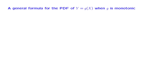We have already worked through some examples in which x was a random variable with a given PDF, and we considered the problem of finding the PDF of y for the case where y was the function x cubed or the function of the form a over x. What both of these examples have in common is that y is a monotonic function of x — in one case increasing with x, in the other decreasing. It turns out that there is a general formula that gives us the PDF of y in terms of the PDF of x, in the special case where we're dealing with a monotonic function.